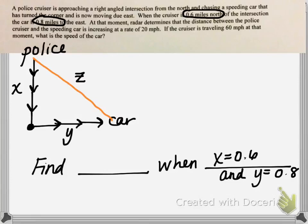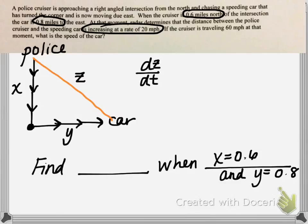At that moment, radar determines the distance between the police cruiser and the speeding car is increasing at a rate of 20 miles an hour. Notice the keyword: rate. This is going to be a derivative — a rate of change — and it's the rate at which the distance between the policeman and the car is changing. On the diagram, that distance is labeled z. So dz/dt, the rate at which the distance between the policeman and the car is changing, equals 20 miles an hour.